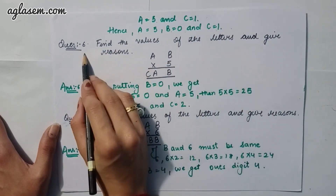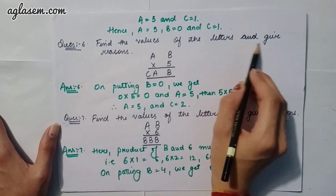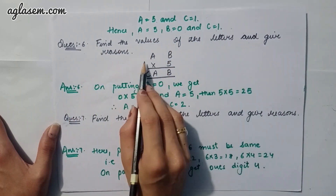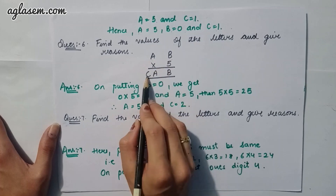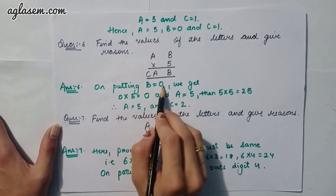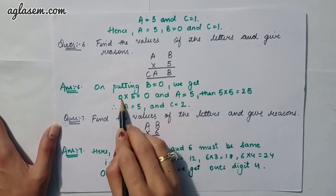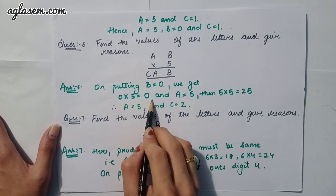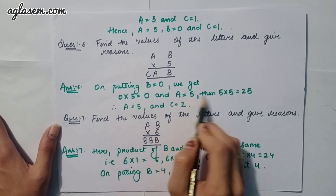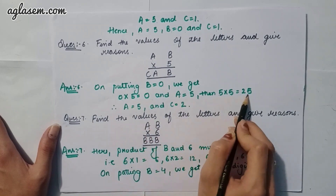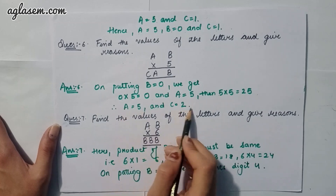Moving to the sixth question: find the value of the letter — AB × 5 = CAB. Putting B = 0: 0 × 5 = 0. Then A = 5, because 5 × 5 = 25, ones digit is 5 and carry 2. So A = 5 and C = 2.